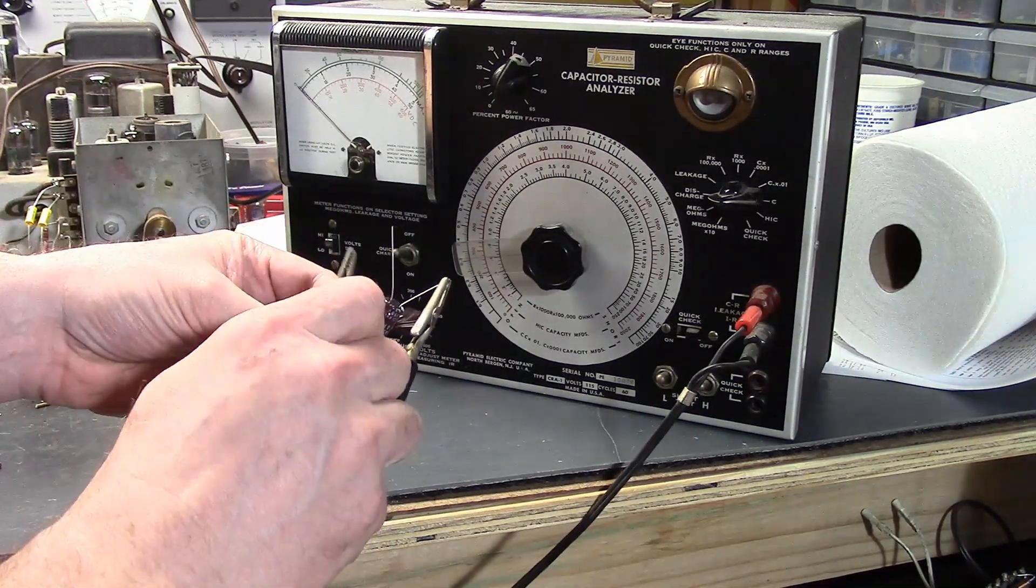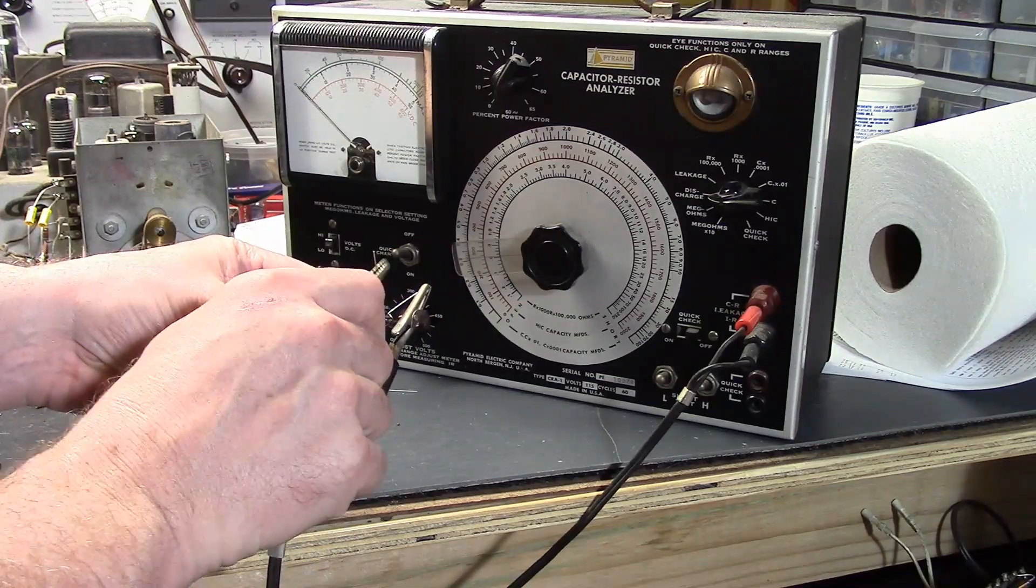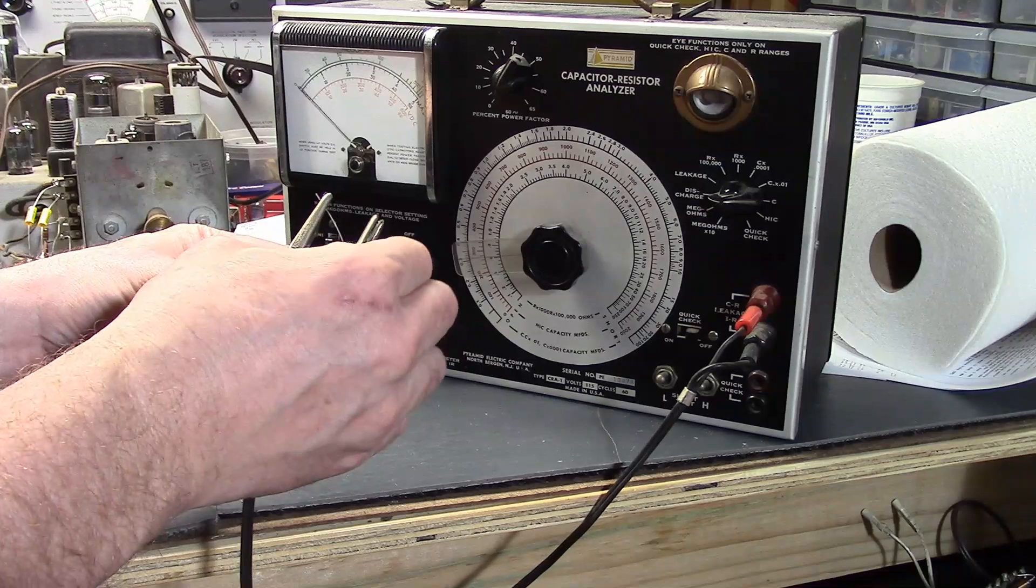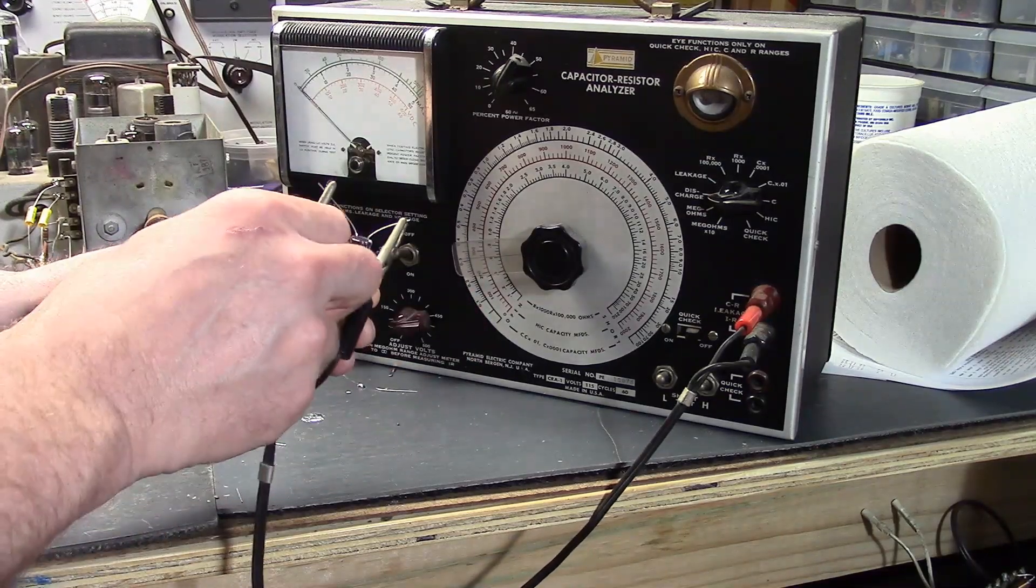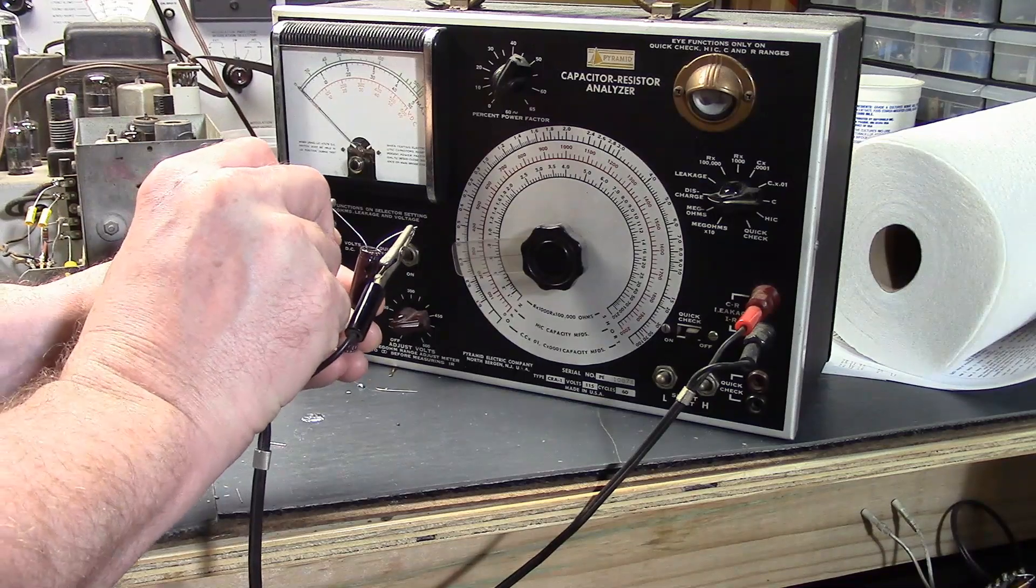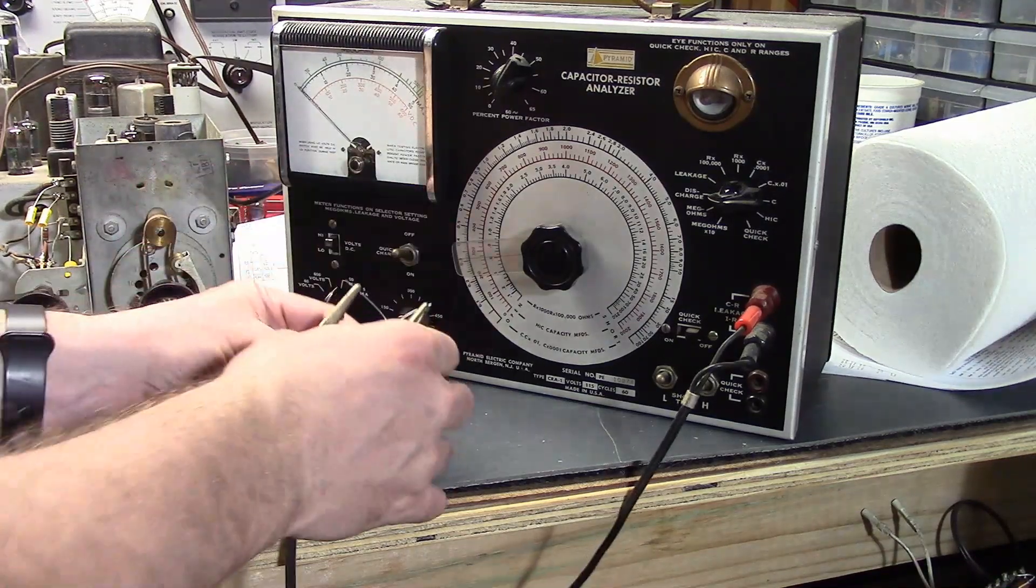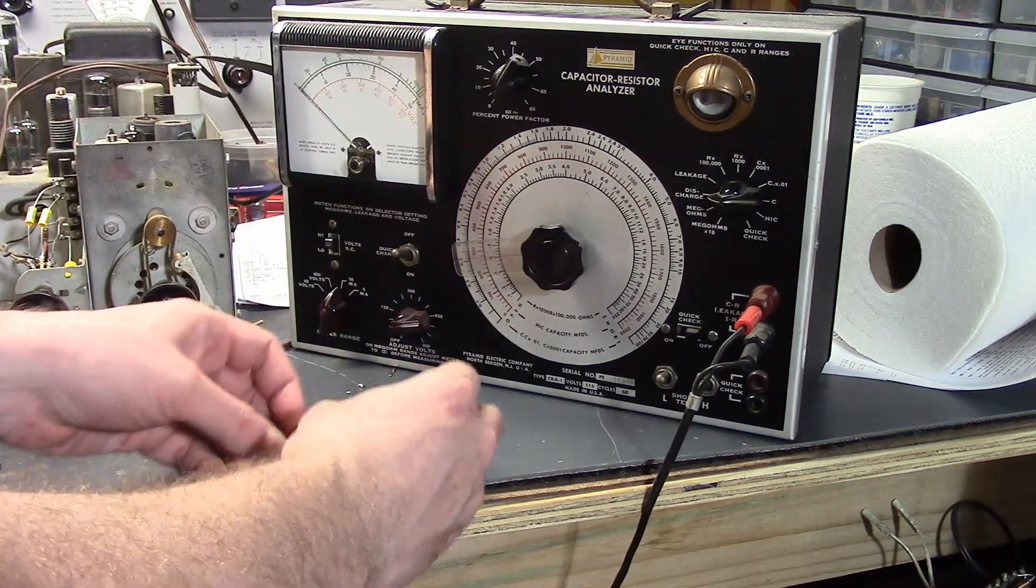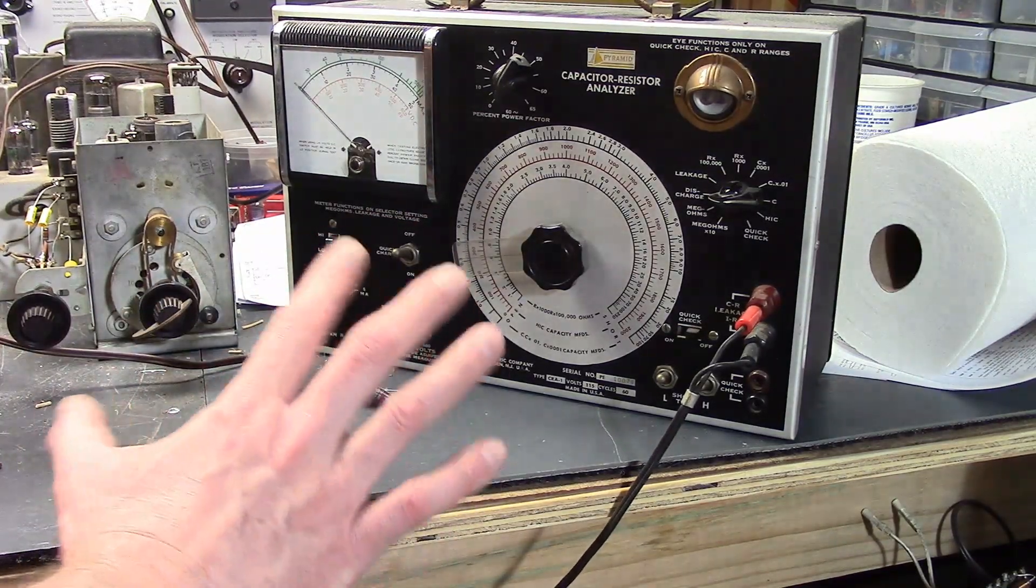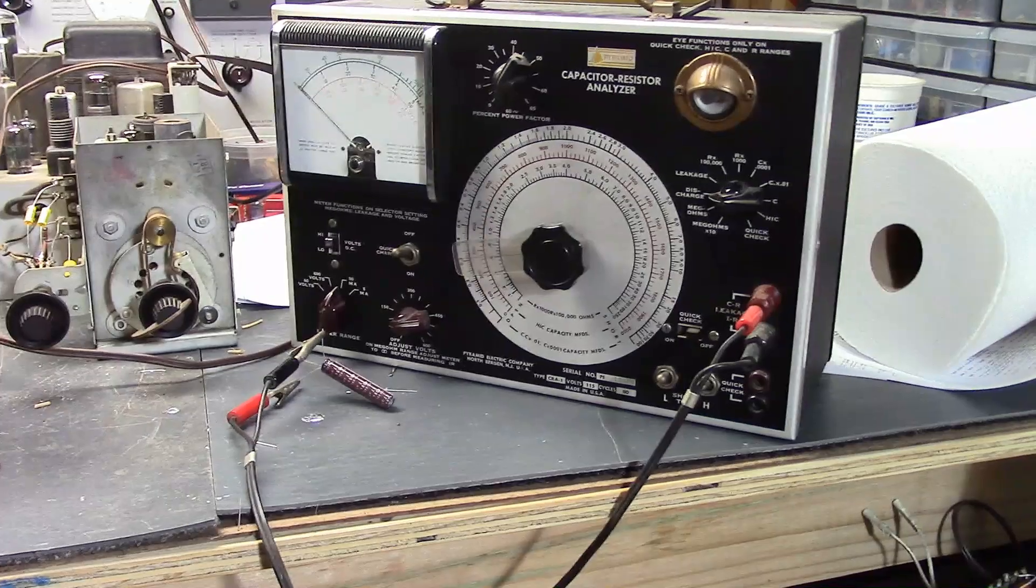I've heard some people say that, yeah, the new caps have a high ripple current rating, but that's because for switch mode power supplies. Well, they do spec it out at 120 hertz, not in the kilohertz like a switch mode power supply would be running at. Let's see. It's going to be stable. All righty.